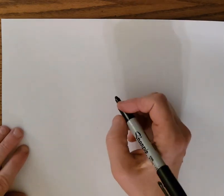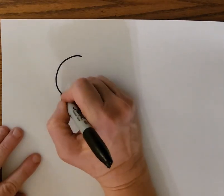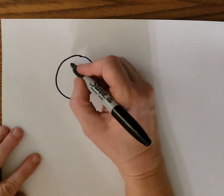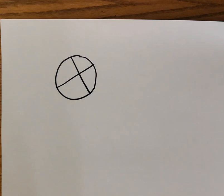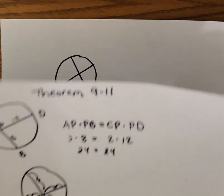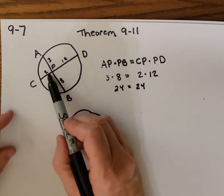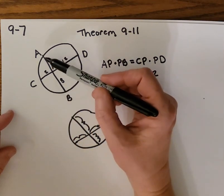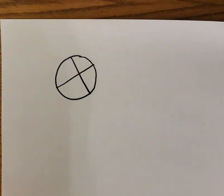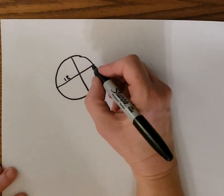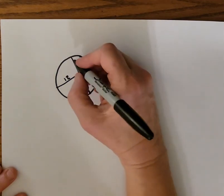Let's do some practice with those three theorems. We have a circle with two chords that intersect. Theorem 9-11 says that when those two chords intersect, the segment of one chord times the other segment of that same chord equals the segment of the other chord times its other segment. Let's see if we can figure out a problem. We'll call this 12, this part 2, this 3 units long, and this x.